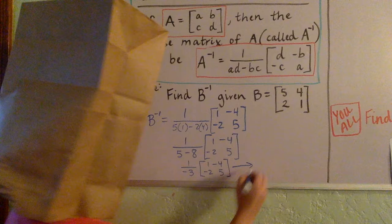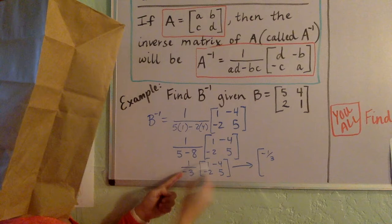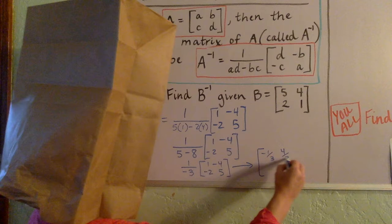And then just last step, now we have this scalar out in front, this negative 1 third. So we need to distribute it to every entry. Negative 1 third times 1 makes the top left a negative 1 third. Negative 1 third times negative 4, negative times negative is positive, 4 is really 4 over 1, so that becomes positive 4 thirds.